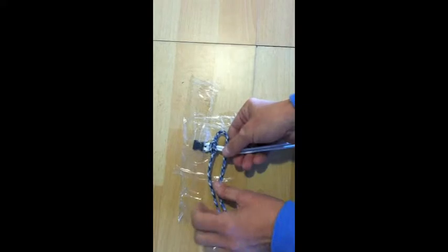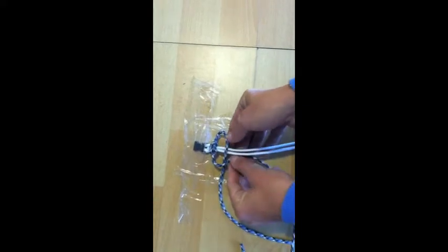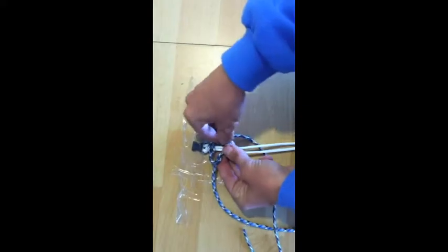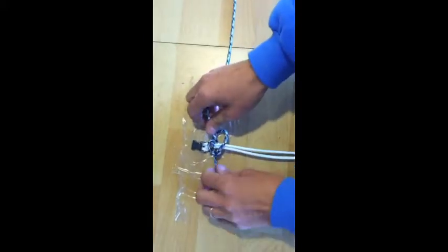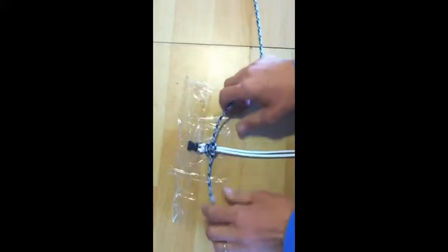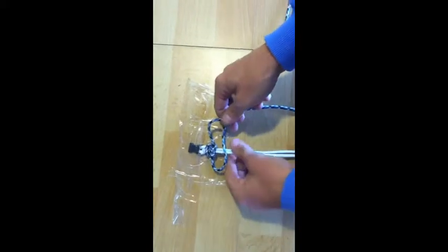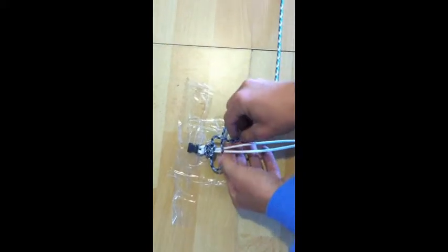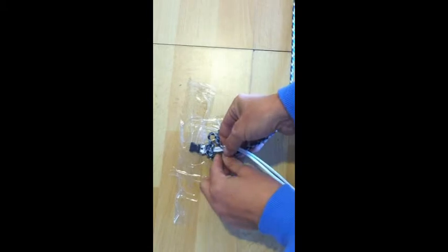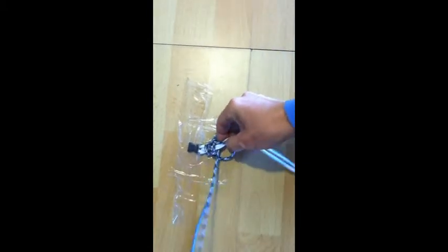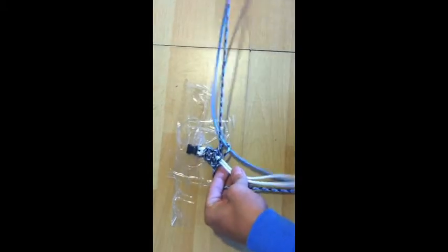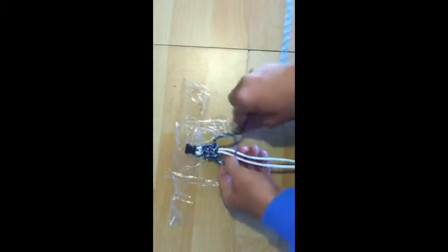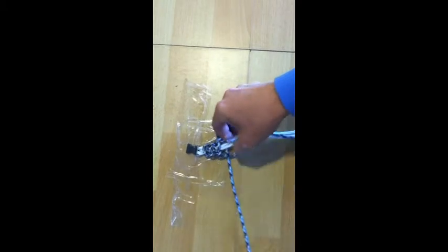Then I'm going to take this one over, cross it, go underneath the other side. This one's going to do just the opposite. Over top, cross this one over and go under, and you're going to continue to do this. This will get kind of fast here. Continue to do it all the way down the bracelet.